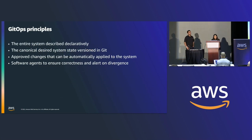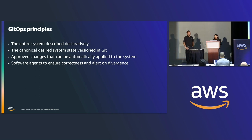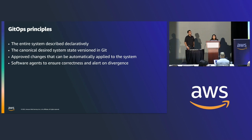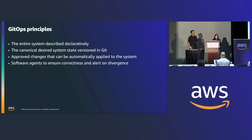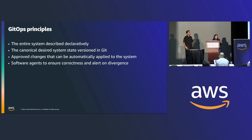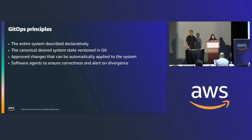There are mainly four GitOps principles, and these principles apply very well to Kubernetes. In GitOps, the entire system is described declaratively. This covers the state of the applications — like number of replicas, pods, and resources allocated — as well as the cloud resources that applications depend on running outside the cluster. Another principle is that the desired state of the system is managed and maintained within Git, and Git becomes the canonical source of truth. This includes your applications as well as infrastructure resources.